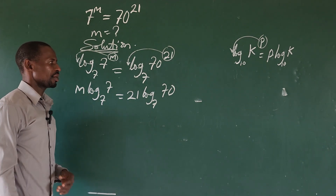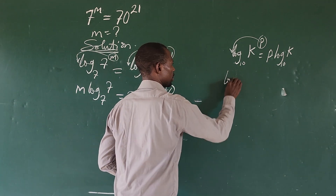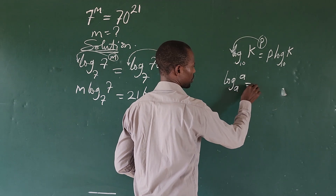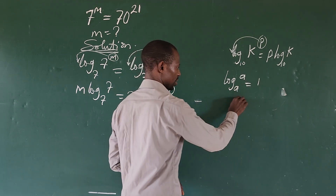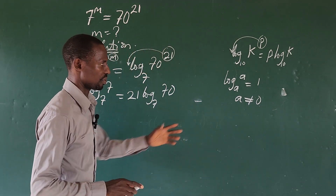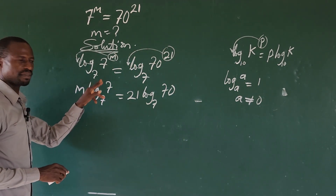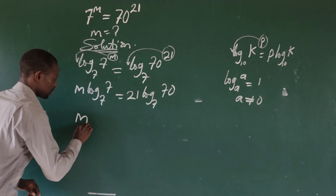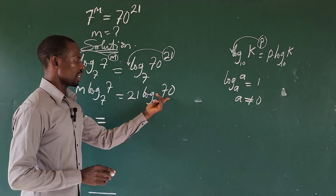We also know that log base a of a equals 1, provided a is not equal to zero. Looking at what we have here, we are having log base 7 of 7, so automatically this gives us 1. So this is going to give us m equals 21 times log base 7 of 70.